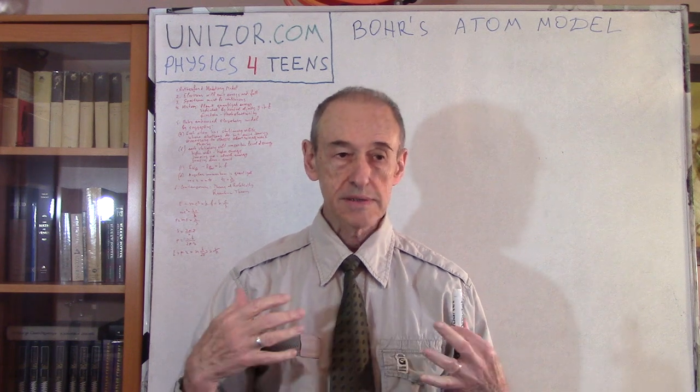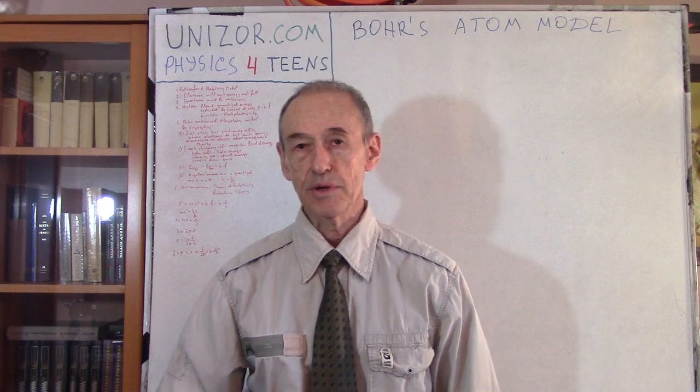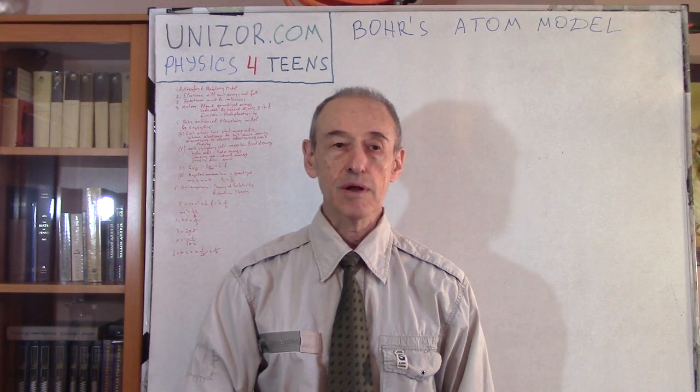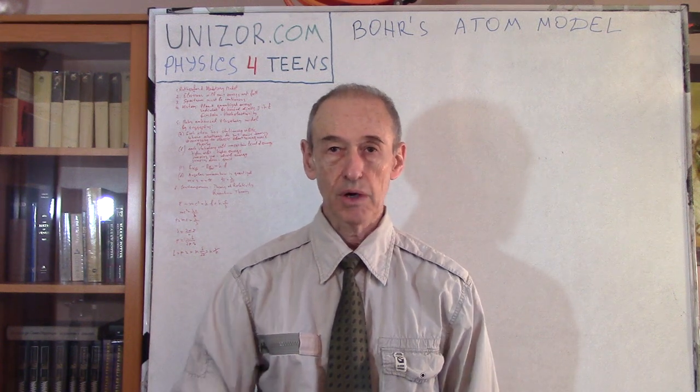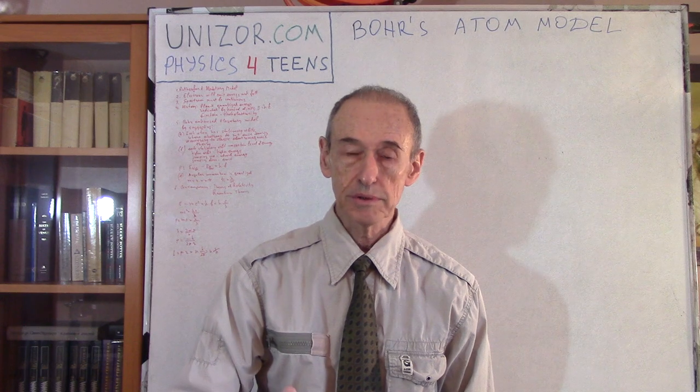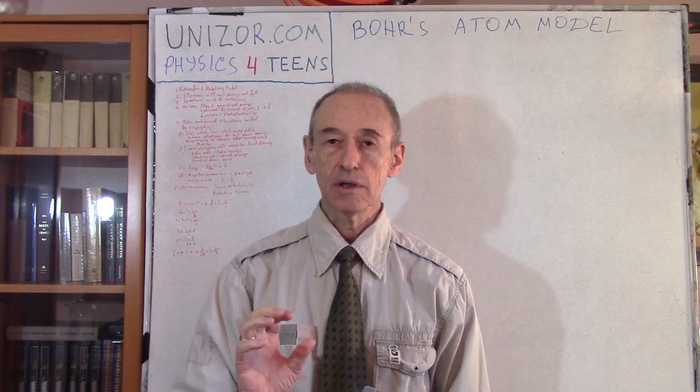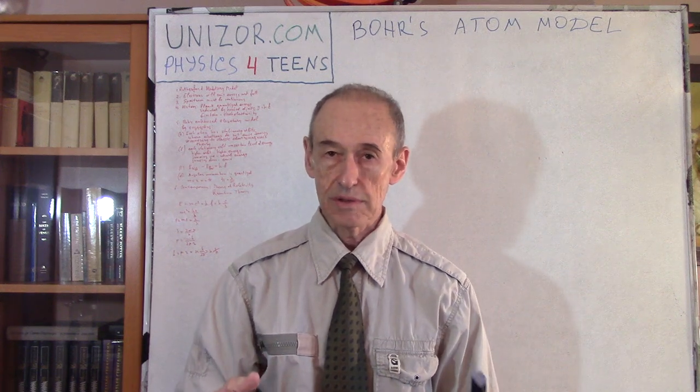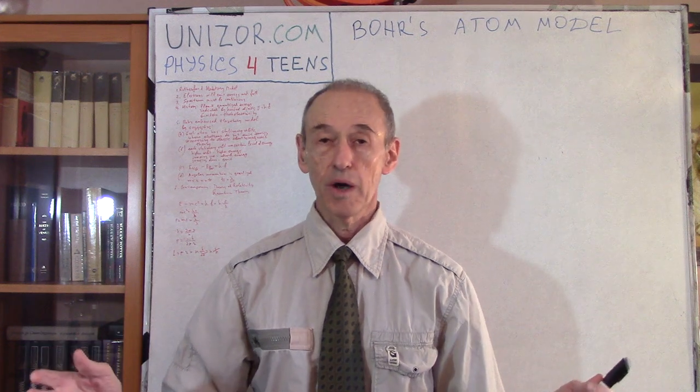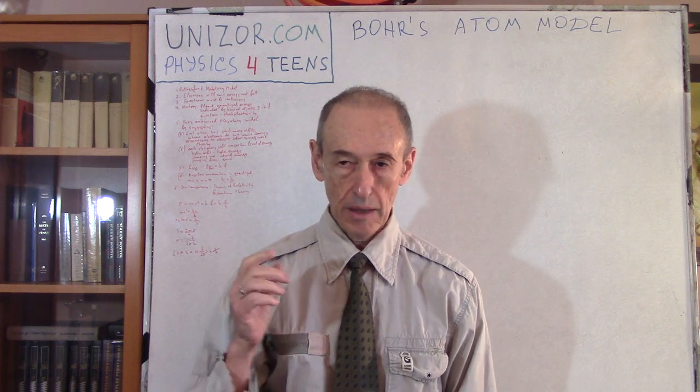Bohr suggested certain things. It was not theoretically derived from certain other principles. First of all, he suggested that there are certain orbits for each element, its own set of orbits, which he called stationary. Being on a stationary orbit, or within a stationary shell, because we're talking about a three-dimensional world - within this stationary shell, the electron is rotating or doing something, whatever it's doing on this orbit or within its shell, but it does not emit energy. Don't ask why. It just doesn't. That's a suggestion. It's a hypothesis.